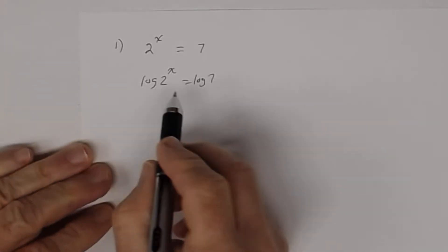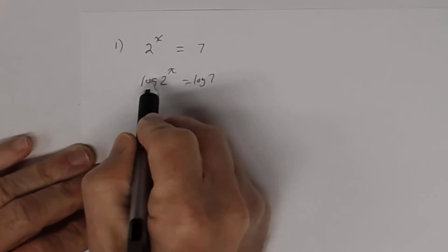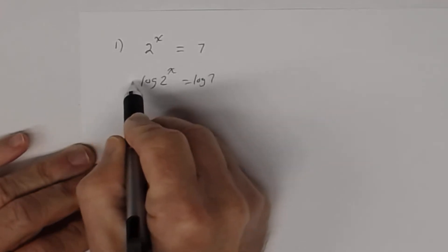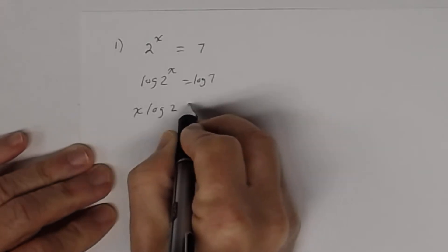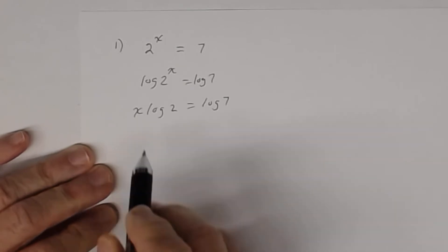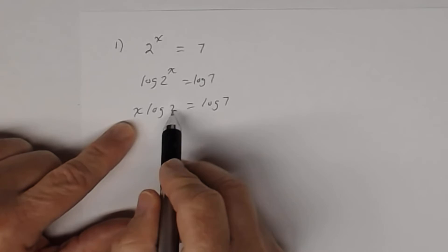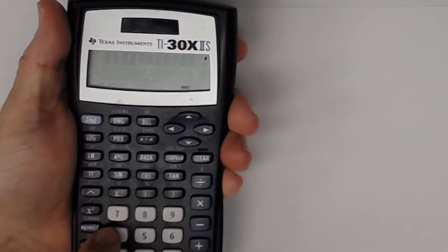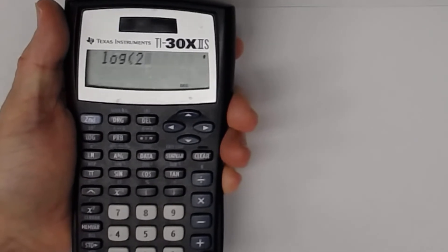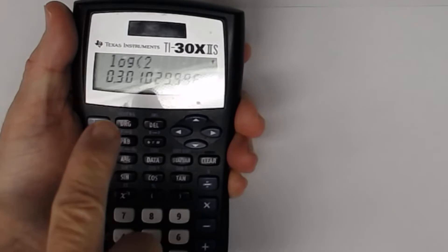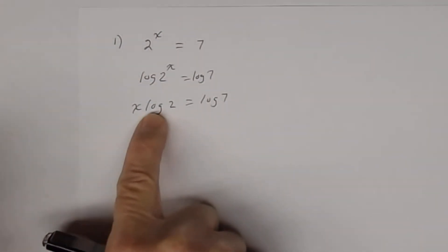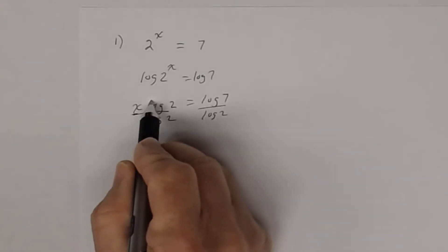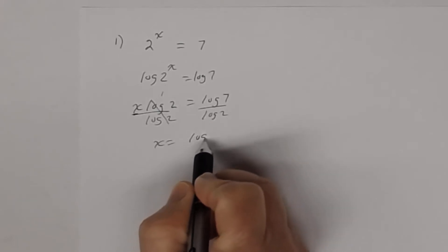Once you take the log of both sides, use the power property of logarithms: pull that exponent out in front. You get x times log(2) = log(7). Now log(2) is a real number — a coefficient — so divide both sides by log(2) to get x by itself.